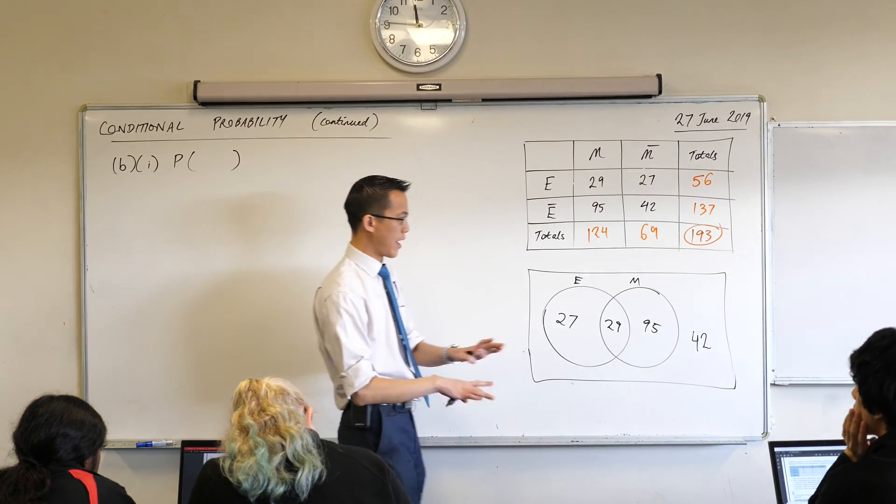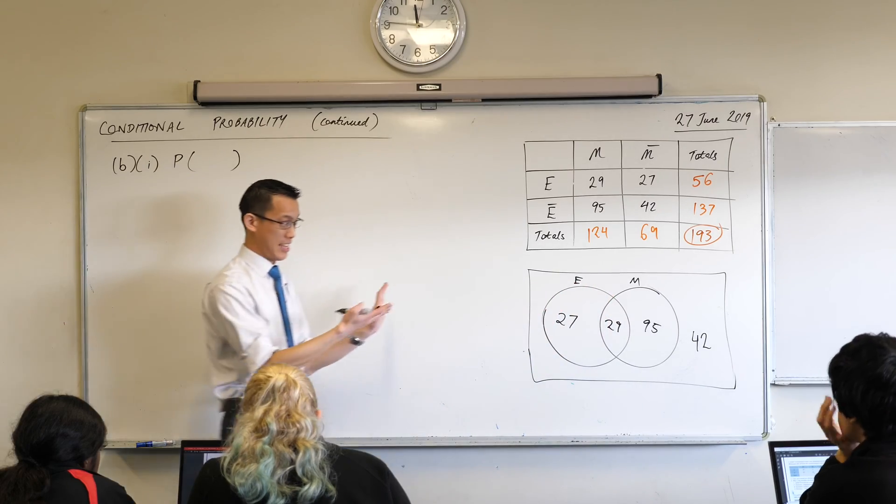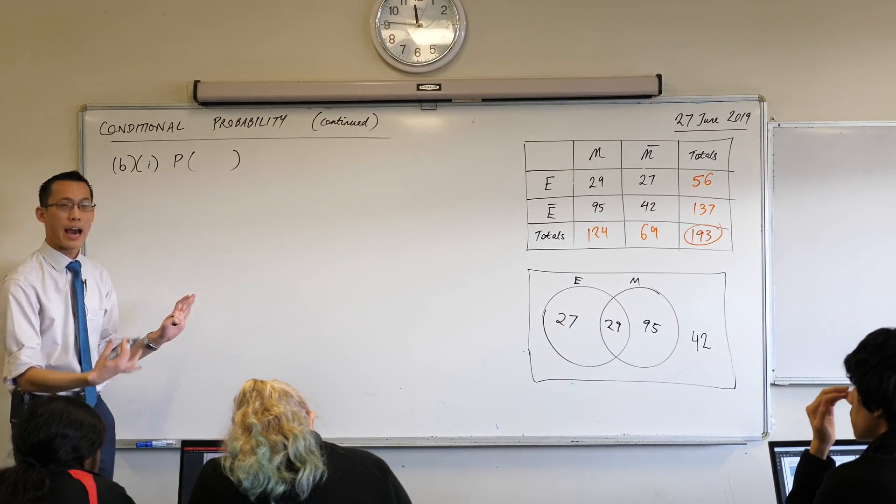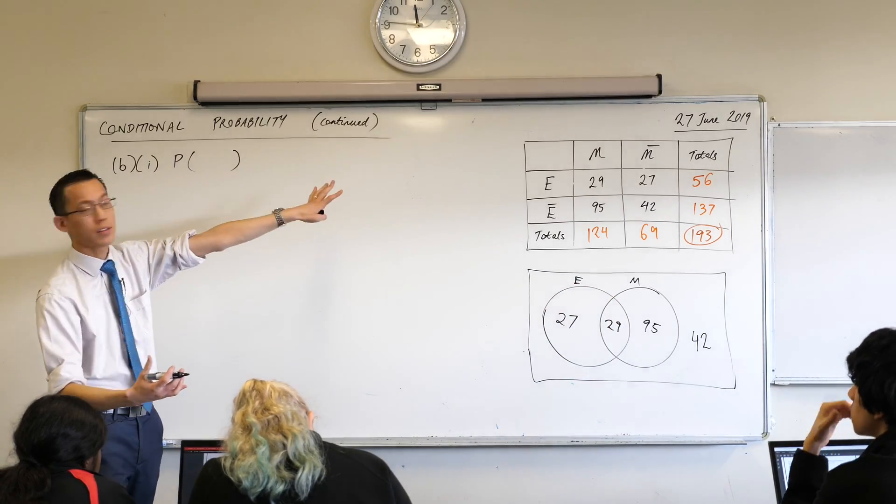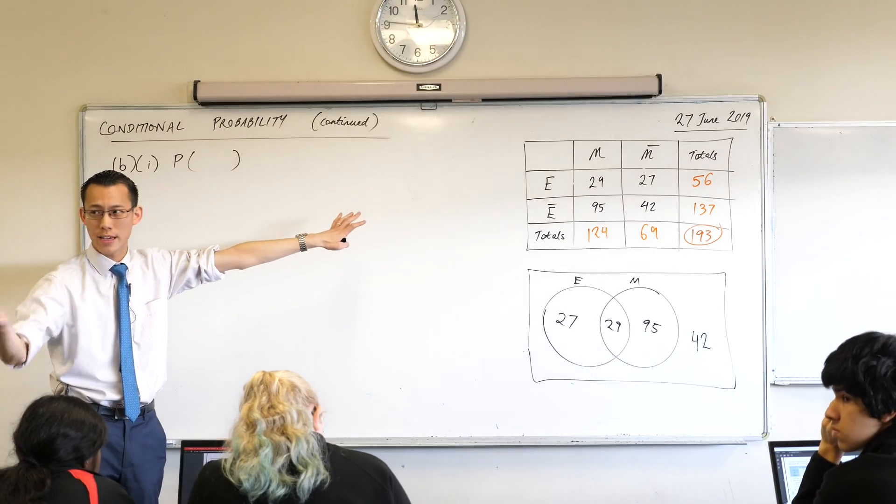So we're looking at the situations where we're not in these circles, right? Before we get to the actual probability, how do I write this? How do I describe someone using the language and notation I've got here who doesn't do extension 1 maths, doesn't do extension 1 English? Zachy, what do you reckon?